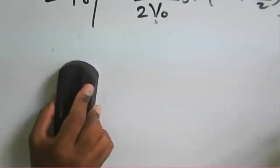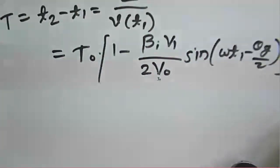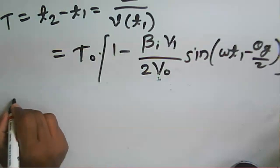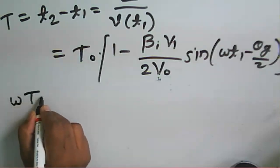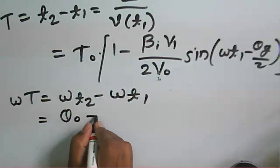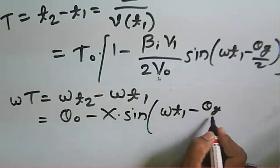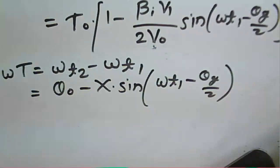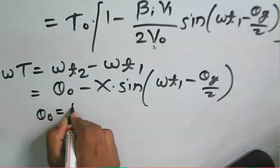The transit time expressed in radians: omega*(t2 - t1) = theta_0 - X * sine(omega*t1 - theta_g/2), where theta_0 = omega*L/v0 is the DC transit angle for distance L, and X is the bunching parameter of the klystron.